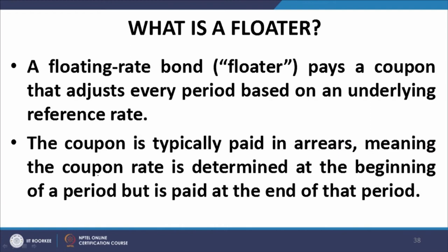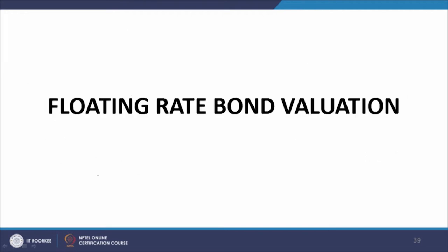The reason it is called floating is because the rate is fixed at the commencement of each interest period. If it is a 6-month period, the rate is fixed at the commencement of each 6-month period; if it is an annual frequency bond, it is fixed at the beginning of each year for that particular year. But the actual payment of interest is made at the end of the year — the coupon rate is determined at the beginning of a period and paid at the end of that period.